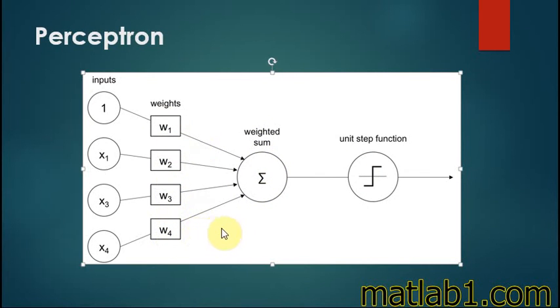The following is a diagram of the perceptron. The inputs are weighted and summed as shown in the preceding image. The sum is then passed through a unit step function, in this case, for a binary classification problem.